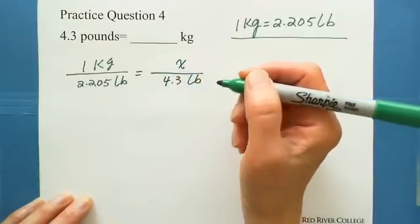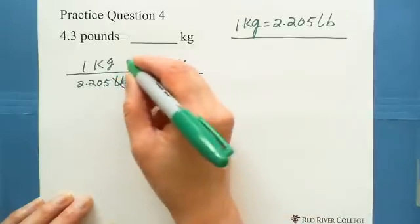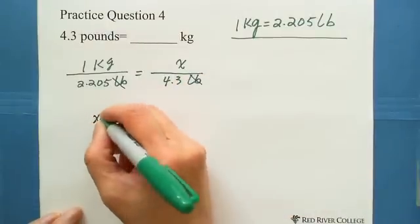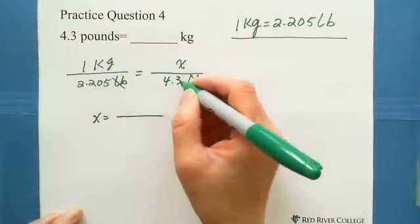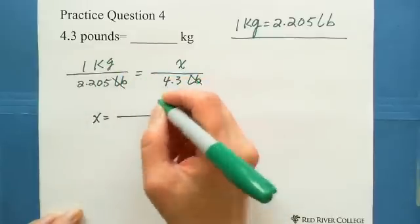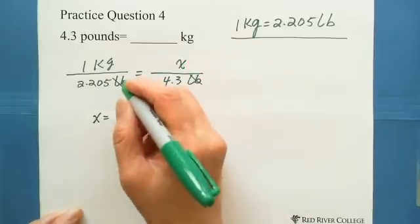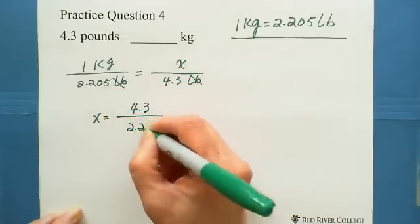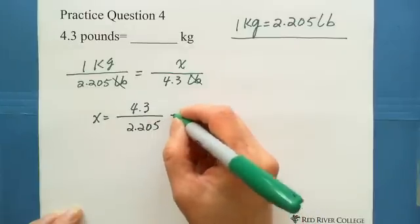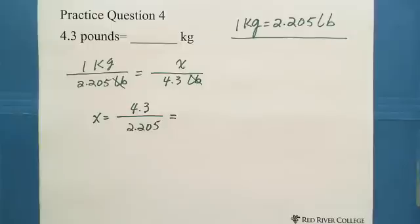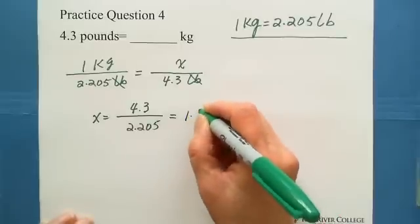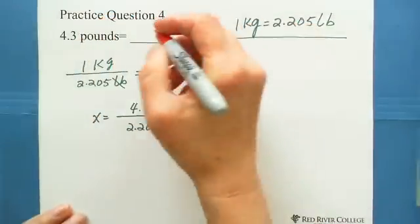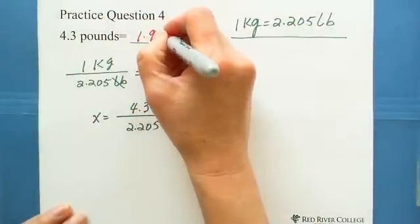How many kilograms? Pounds pounds cancel out. Cross multiplication, x equals these two numbers, both given, multiply 1 times 4.3 equals 4.3. This number multiplied with x is always divided by. So we got 4.3 divided by 2.205 equals 1.95 kilograms. So 4.3 pounds equivalent to 1.95 kilograms.